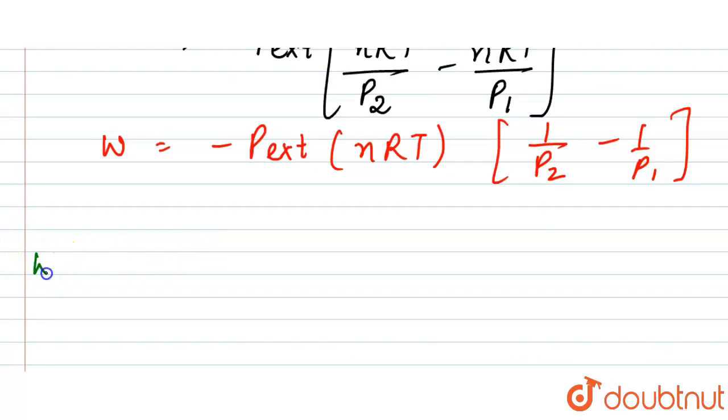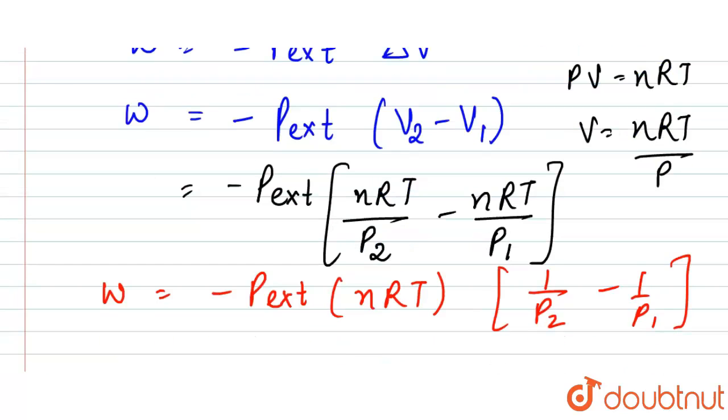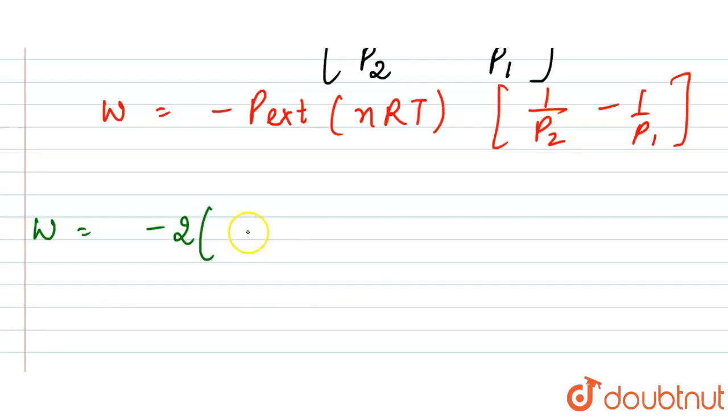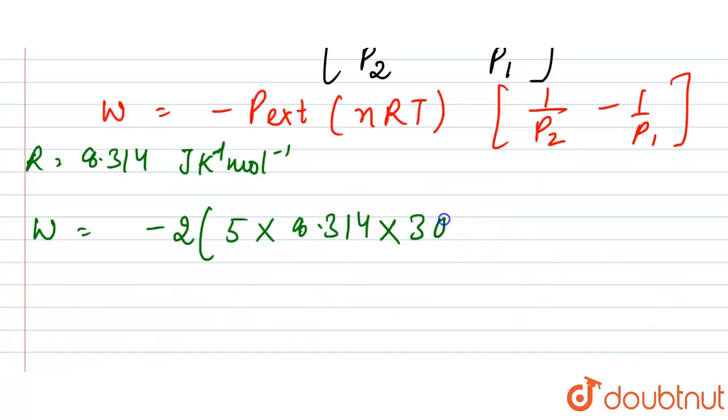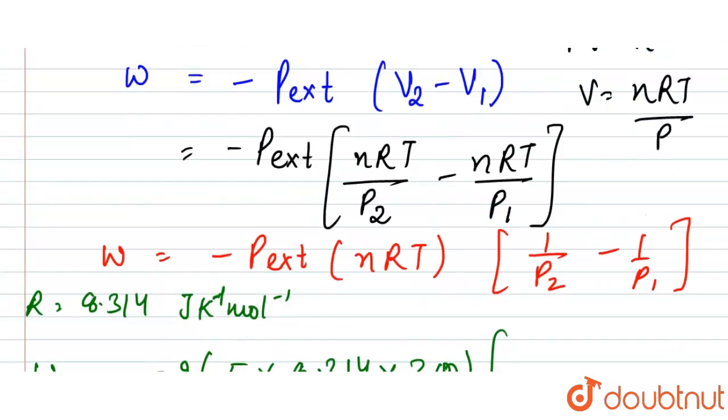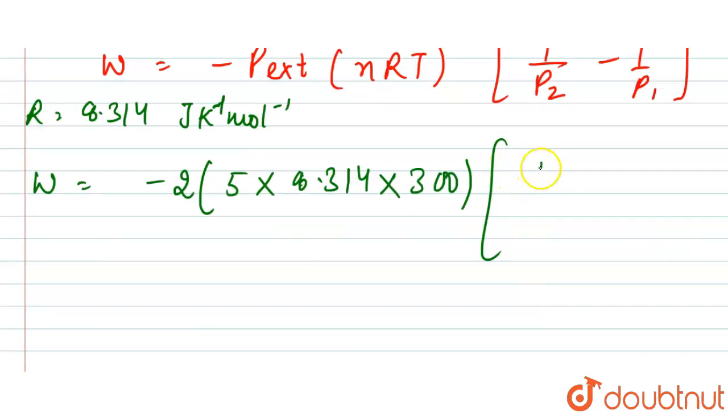Now our p external value is given to us, that is minus 2. N value is 5, R we will take that is 8.314 joules per kelvin per mole, temperature is given to us, 300 kelvin. P2 value is 1 and p1 is 10, so here it is 1 upon 1 minus 1 upon 10.